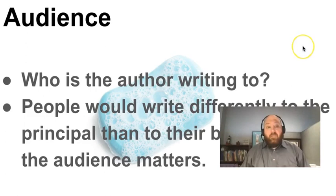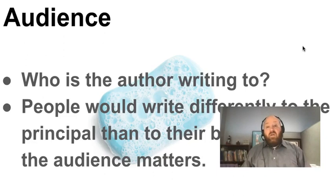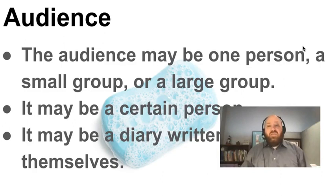Then we have the Audience — who is the person writing to? I write differently to my wife than I would to my boss. It could be to one person, a large group, a small group, could be a speech, or a diary someone writes for themselves. Knowing the audience is going to help us interpret what the intent of the message is and what the message is.